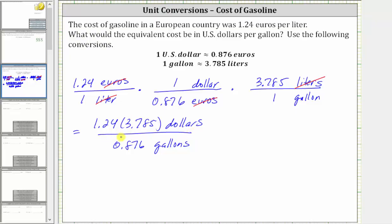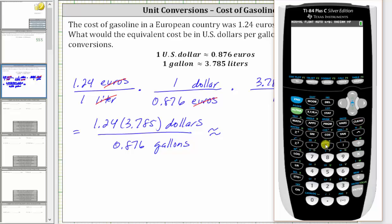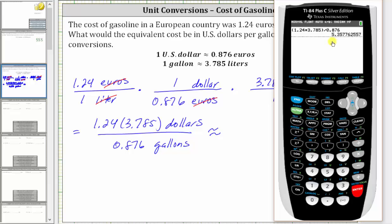The next step is to find this quotient. Let's do this on the calculator. In parentheses for the numerator we have 1.24 times 3.785, close parenthesis, and then divide by the denominator of 0.876. Because this represents dollars and cents, we'll round to two decimal places. Since there's a seven in the third decimal place, you round up. The value is approximately 5.36.